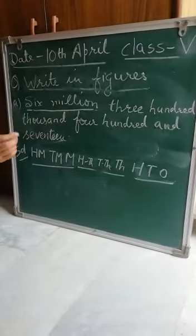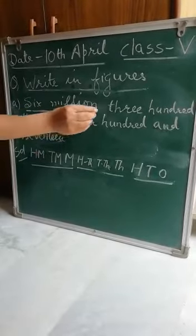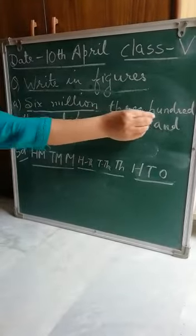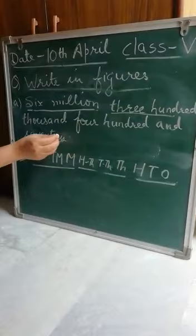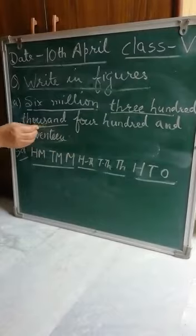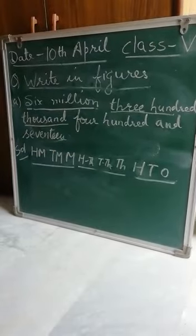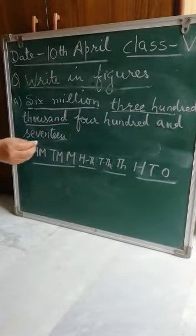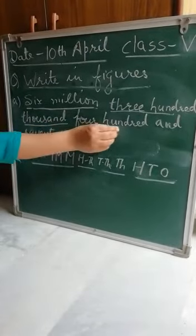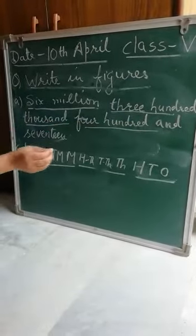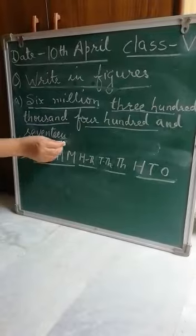6,300,000 — this is one group, this is the other group, and this is the third group: 417.